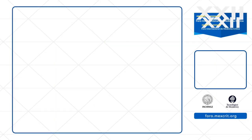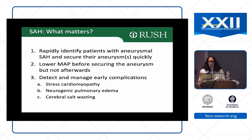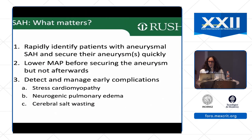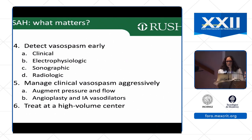You also want to identify the aneurysm that caused the subarachnoid hemorrhage rapidly, manage blood pressure because many patients present with elevated blood pressure — you want that under control until you treat the aneurysm but not afterwards. You want to detect and manage early complications including stress cardiomyopathy, neurogenic pulmonary edema, and cerebral salt wasting, which you start to see a few days into the subarachnoid hemorrhage.